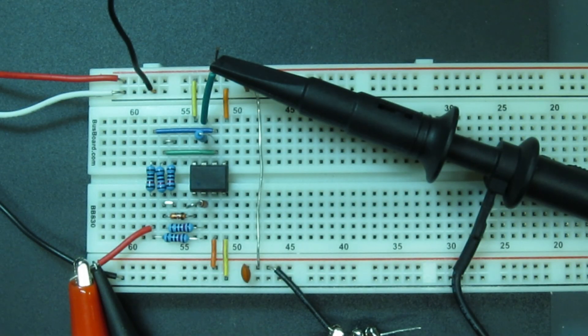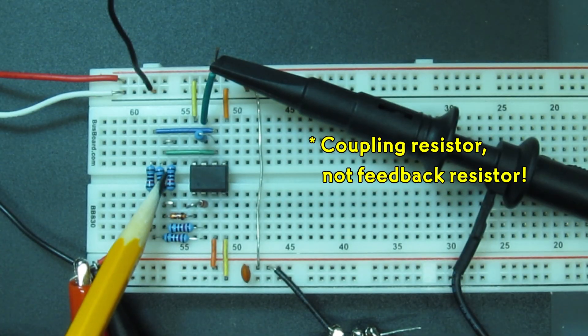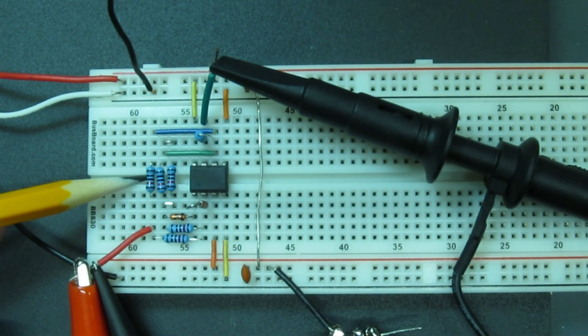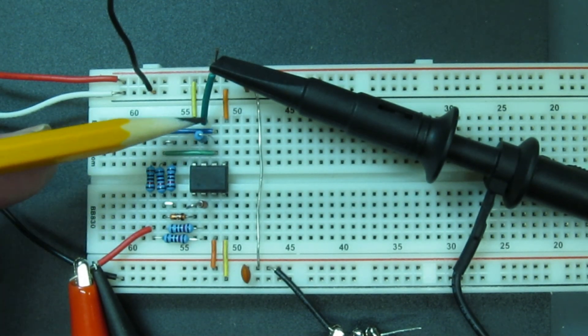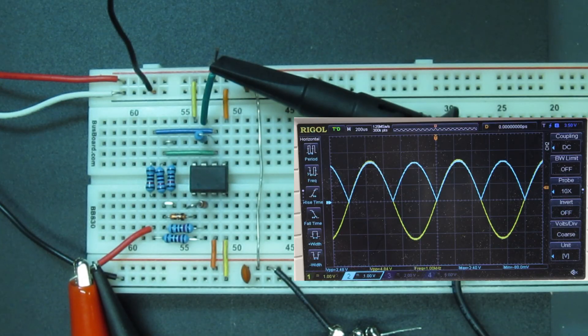Here it is on the breadboard. I've added a second 10k feedback resistor in parallel with the first. I've added the resistor from the circuit input to the input of the inverter, which is now an adder. When I turn it on, there's nearly a perfect full-wave rectified signal.